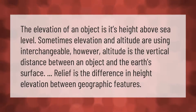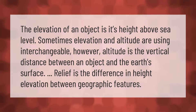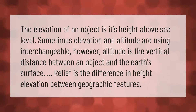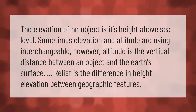The elevation of an object is its height above sea level. Sometimes elevation and altitude are used interchangeably; however, altitude is the vertical distance between an object and the earth's surface. Relief is the difference in height or elevation between geographic features.